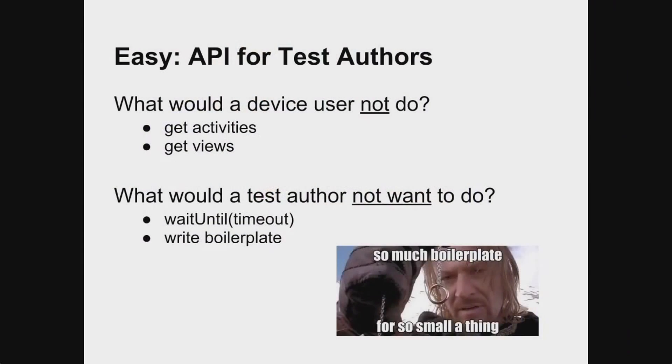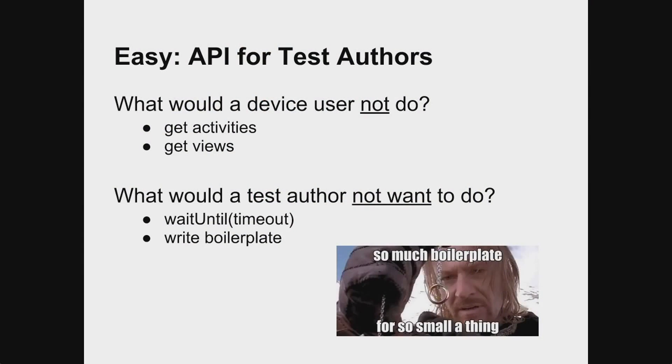What if our framework just did this and nothing else? Just as important as what the API does is what it does not do. We want you to do the right thing and prevent you from doing the wrong thing. The device user has no idea about the internals of the application — they don't care about activities or views. Getting these internal objects is kind of dangerous because the state of the application is constantly changing. If you're holding on to such an object, it will get stale. So we left out that API that some other frameworks include.